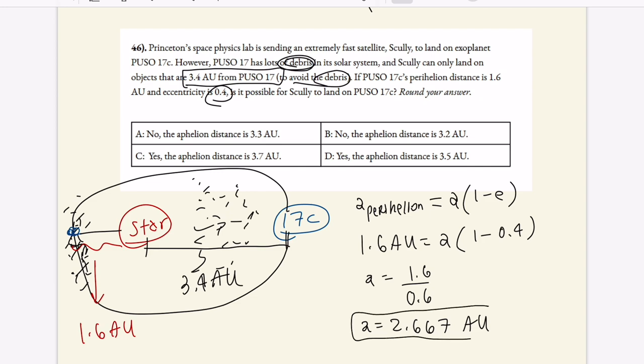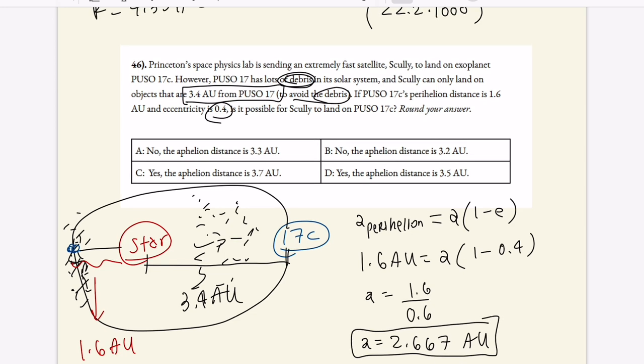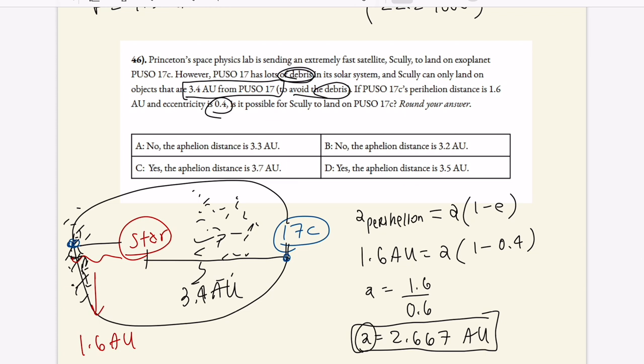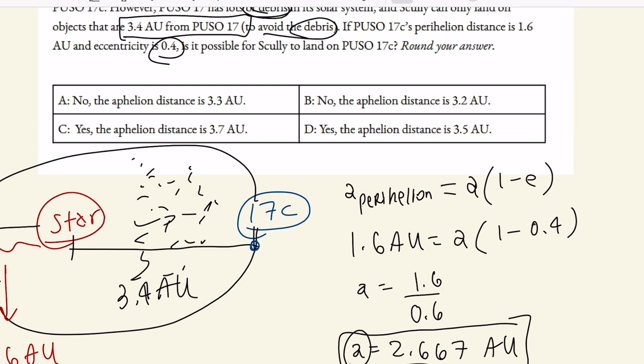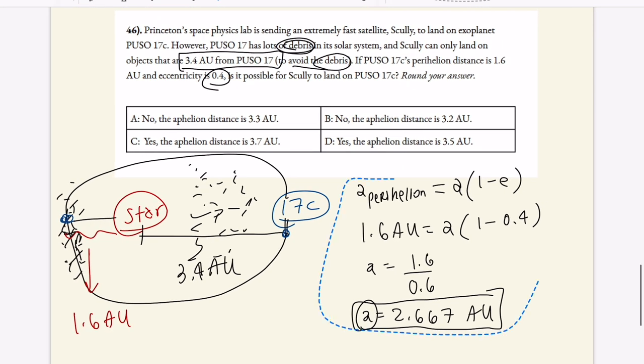This gives us that A is equal to 2.667 AU. And you might say, okay, what does that tell us? We need to know basically at the aphelion distance, the distance of farthest approach, if we're going to be outside the debris disk of the system. So at aphelion, this value, are we greater than the 3.4 AU boundary condition? And aphelion is related to the semi-major axis and the eccentricity of a system. So let's go ahead and write what that equation is. Aphelion is basically no matter what we will be safe there, no debris will be harming us.